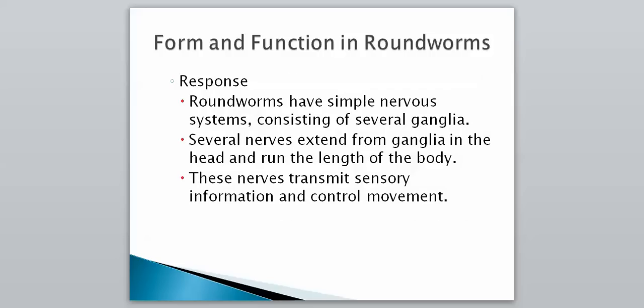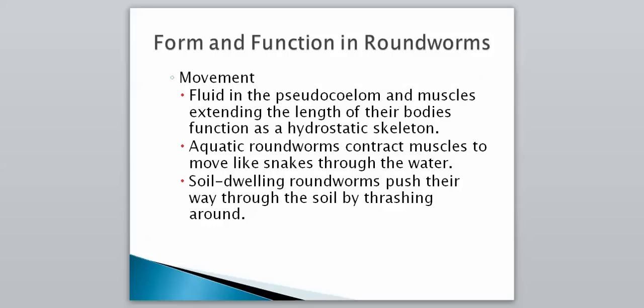In terms of how they respond: roundworms have a simple nervous system that consists of several ganglia — which is just a concentration of nerve cells. Several nerves extend from ganglia in the head and run the length of the body. These nerves transmit sensory information and control movement, so the roundworm can sense its environment and control movement. Fluid in the pseudocoelom and muscles that extend the length of their bodies function as a hydrostatic skeleton.